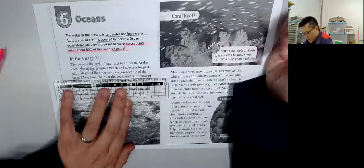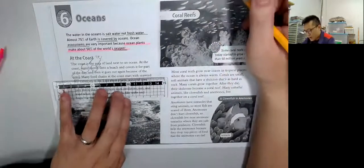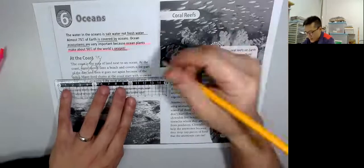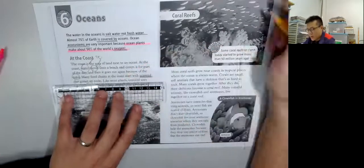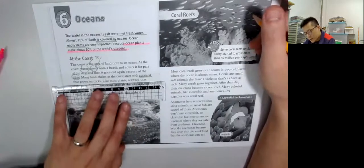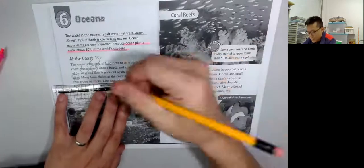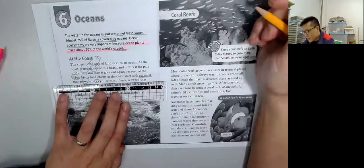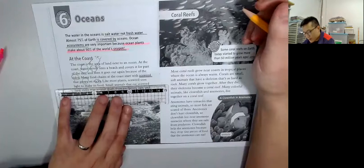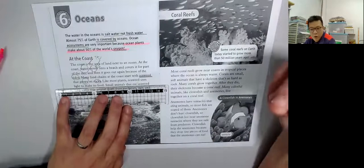Many food chains, 食物鏈, at a coast start with seaweed. 整個食物鏈由紫菜講起, 海藻. That grows on rocks. Like most plants, seaweed uses light to make its food.